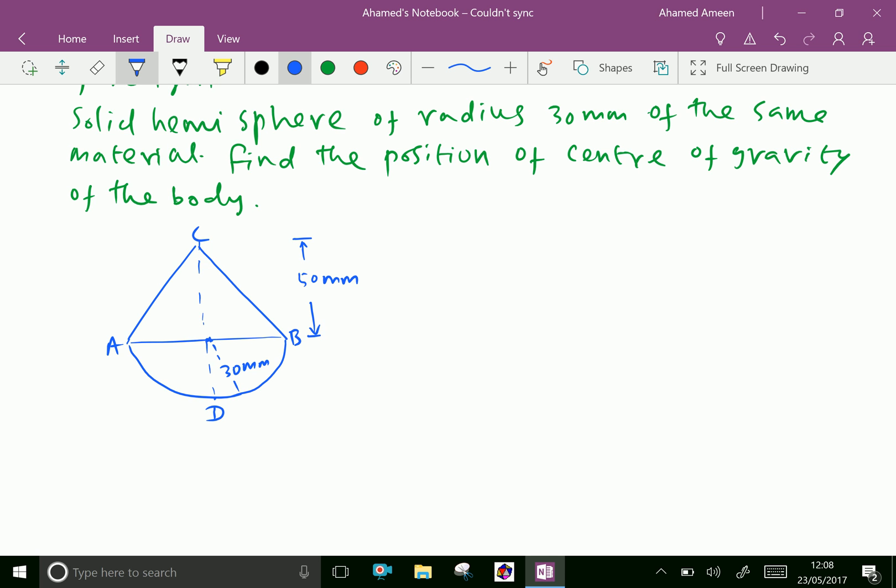Now, let us find center of gravity, position of center of gravity from the base of the hemisphere. Let V1 is volume of hemisphere that is 2 by 3 pi r cubed, which is equal to pi by 3 into radius is 30, 30 cubed, which is equal to 18,000 pi mm cubed.